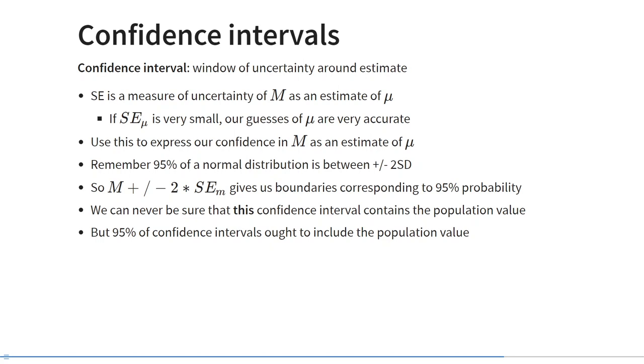This is a theoretical distribution, so we know its theoretical properties and we estimate its parameters based on the sample, but we don't typically observe the sampling distribution. One way to use the standard error is to express our uncertainty about the sample statistic as estimator of the population parameter, and this procedure is called a confidence interval. A very simple intuition: imagine that we calculate the average height of people in a sample and it's 172 centimeters. We could draw some windows around this value that tell us the population value is unlikely to be much smaller than this and unlikely to be much higher than this. Those two windows — the lower bound and the upper bound — are a confidence interval.